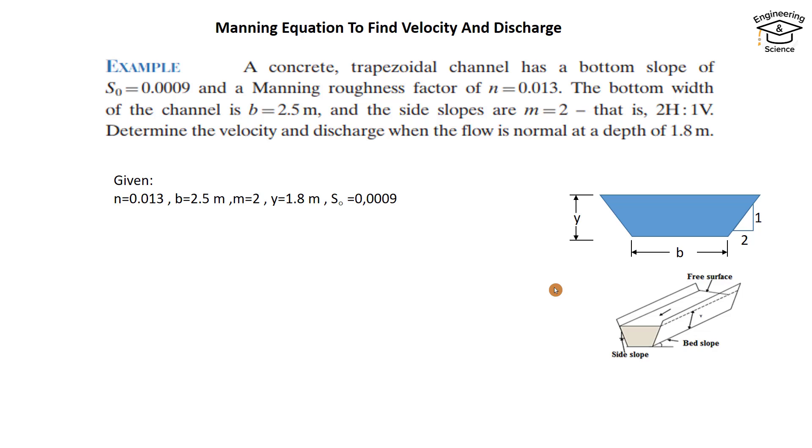Required: we have to find velocity and discharge. Solution: That's the Manning equation for finding velocity, which equals Kₙ/n times the hydraulic radius R to the power 2/3 and Sf, which is the friction slope, to the power 1/2.